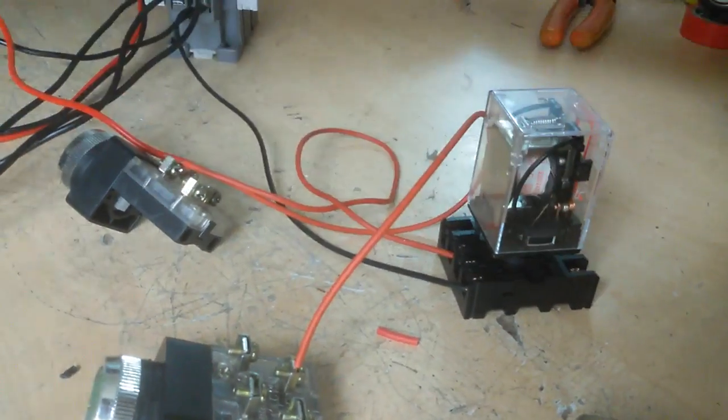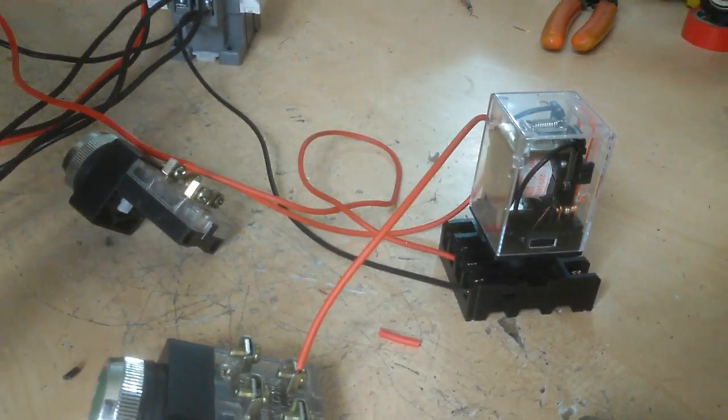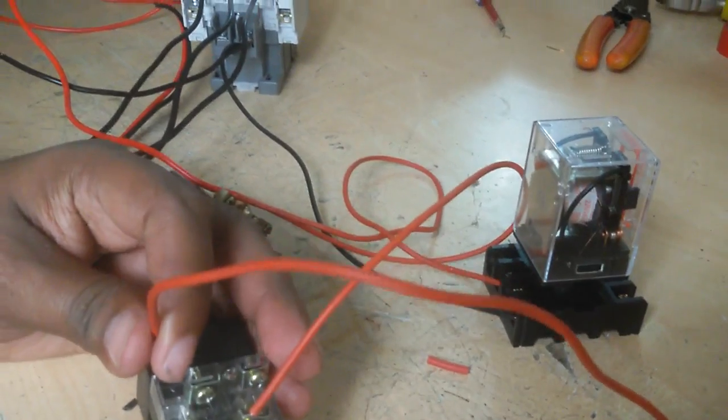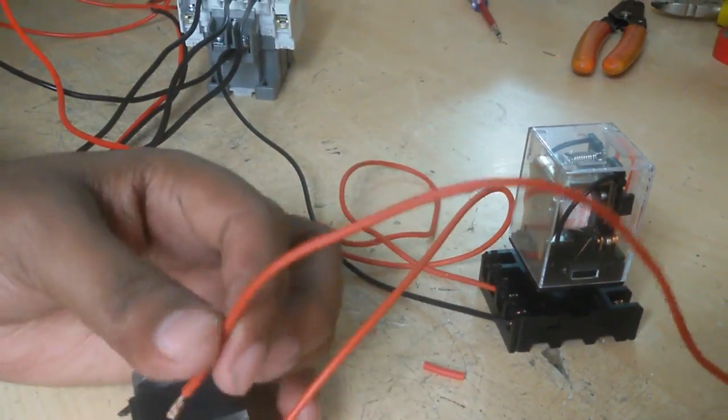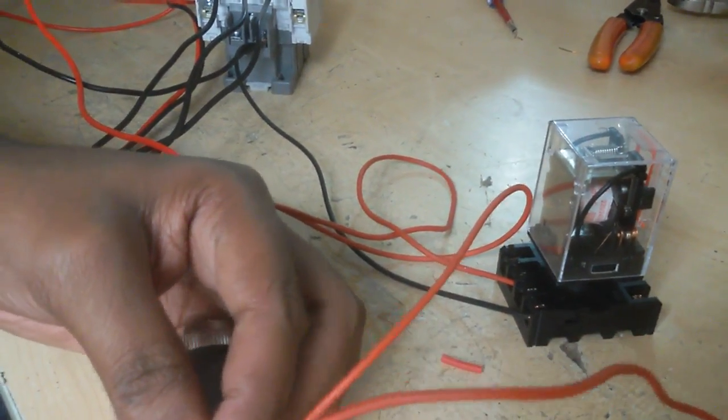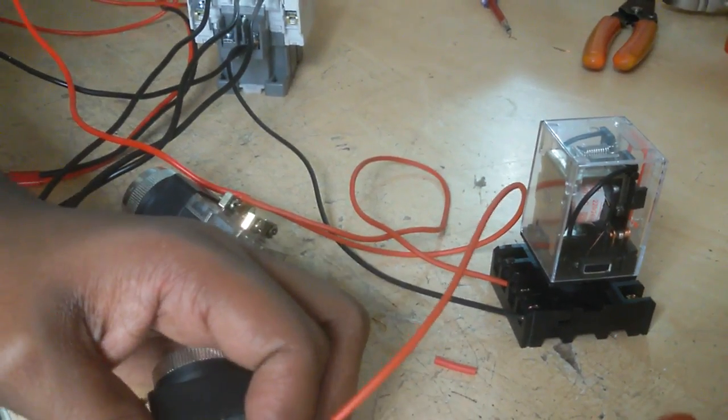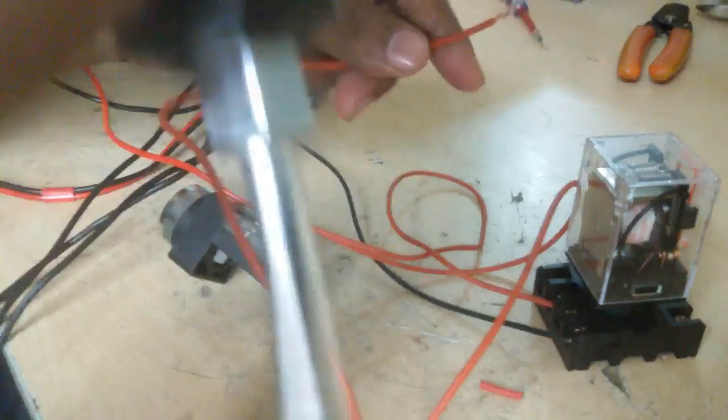This is the start switch on the other terminal is connected there. And this wire is connected now to the relay coil.